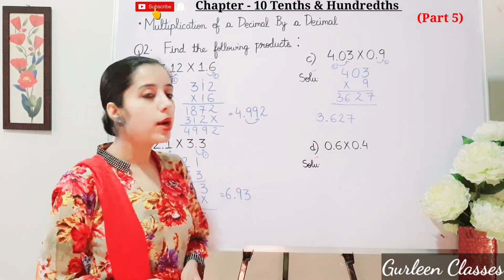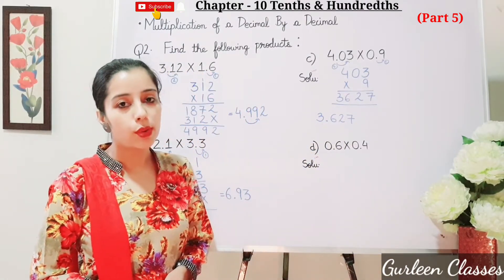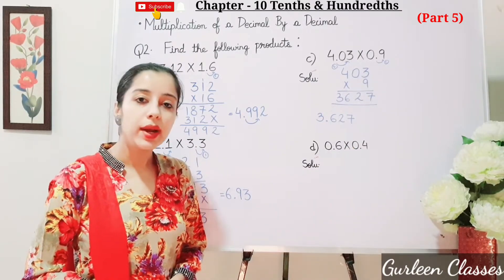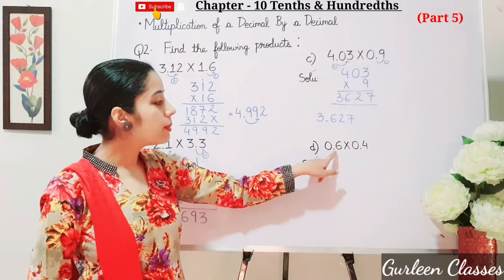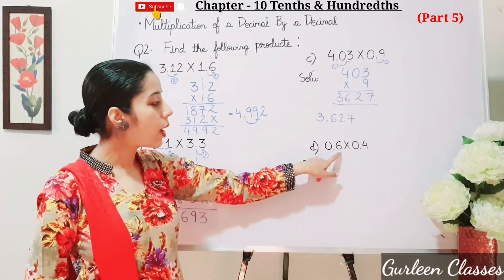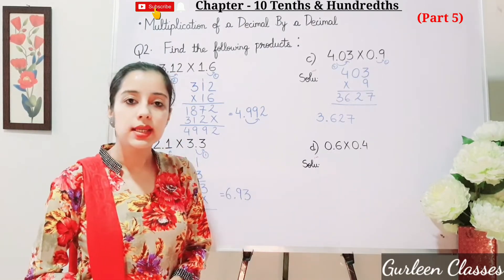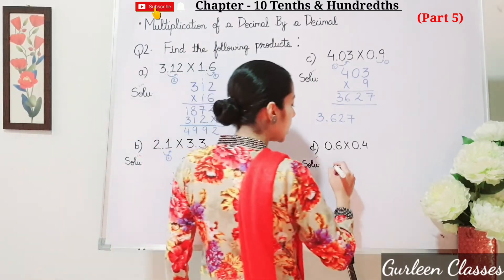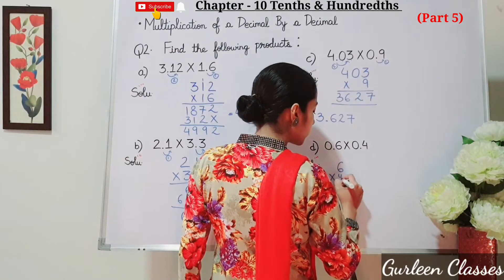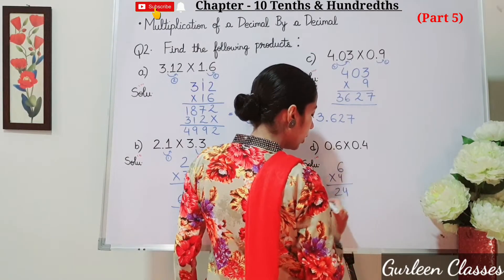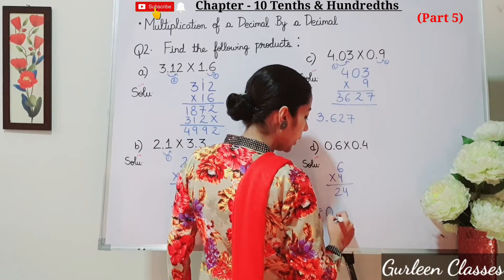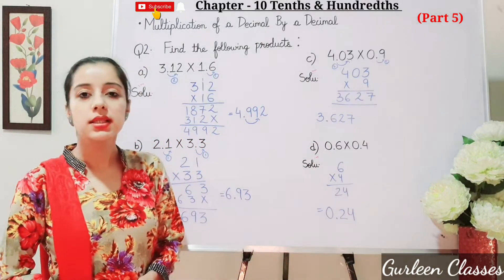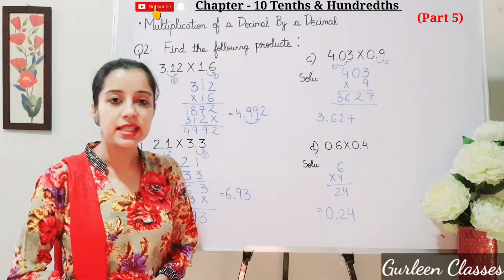Now part d: 0.6 into 0.4. So we will multiply 6 into 4. 6 fours are 24. After the decimal point, how many digits are there? 1 and 2 — so in the answer there should be 2 digits after the decimal point. So the answer is 0.24. I hope students now you are able to multiply a decimal by a decimal.